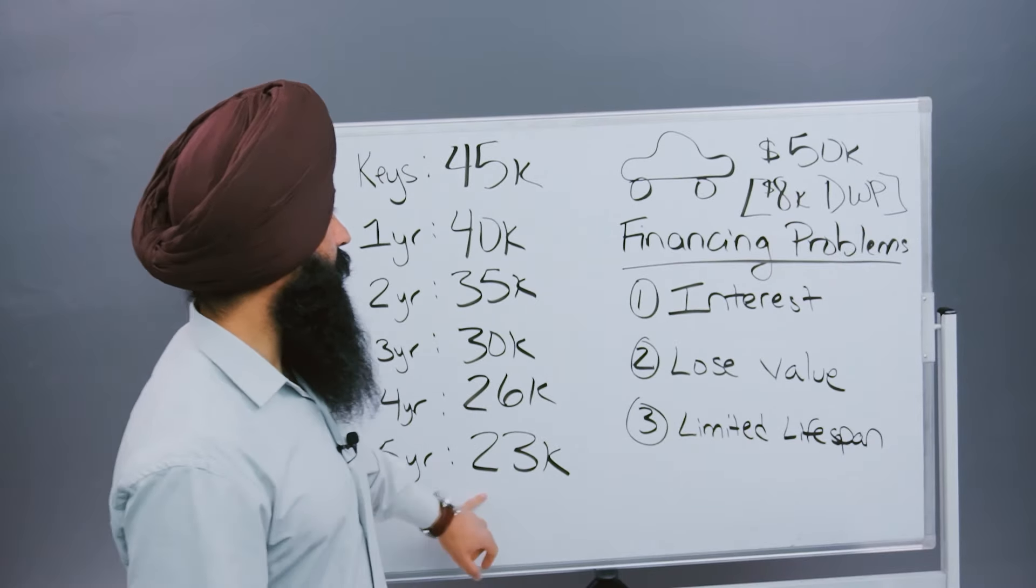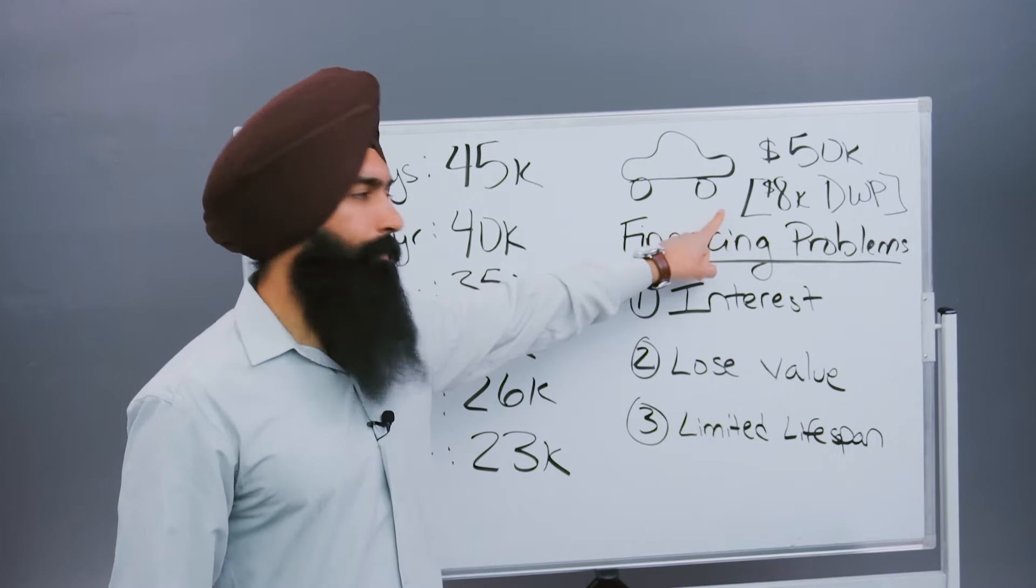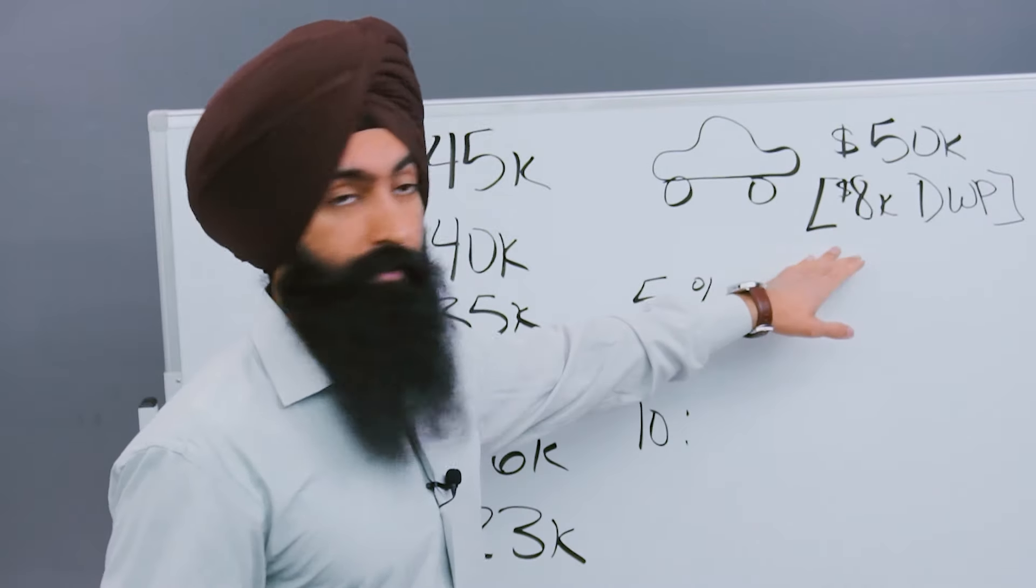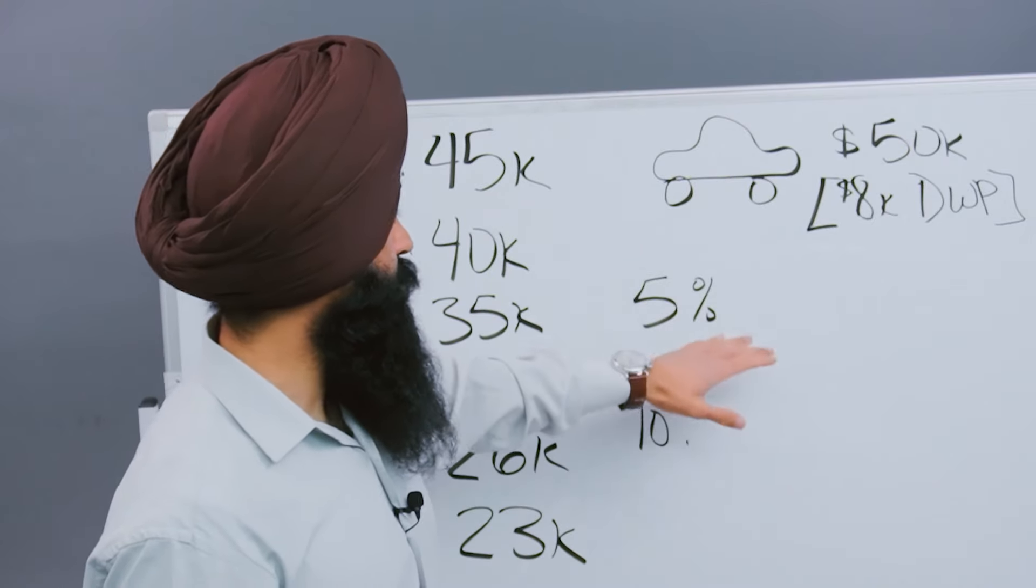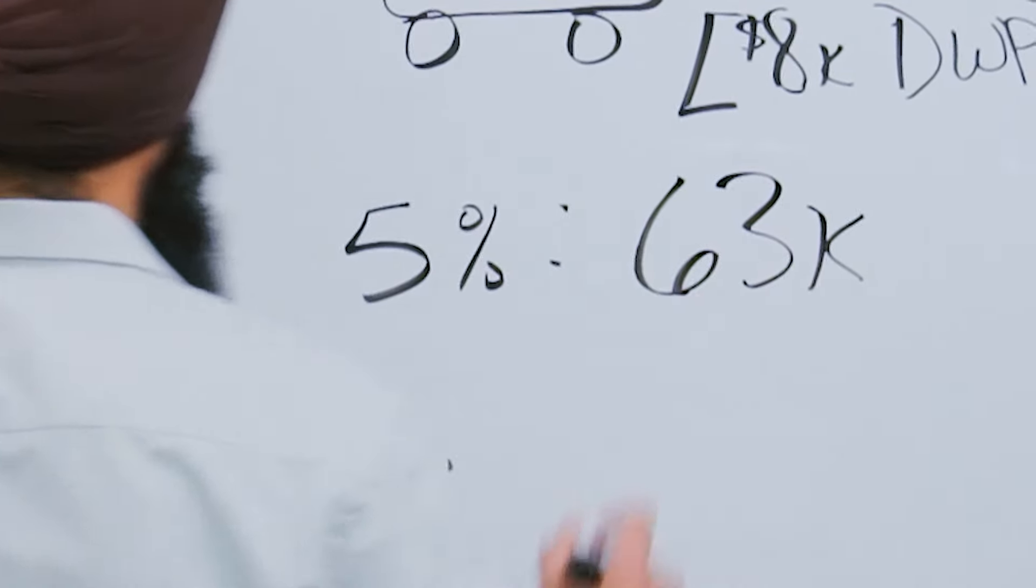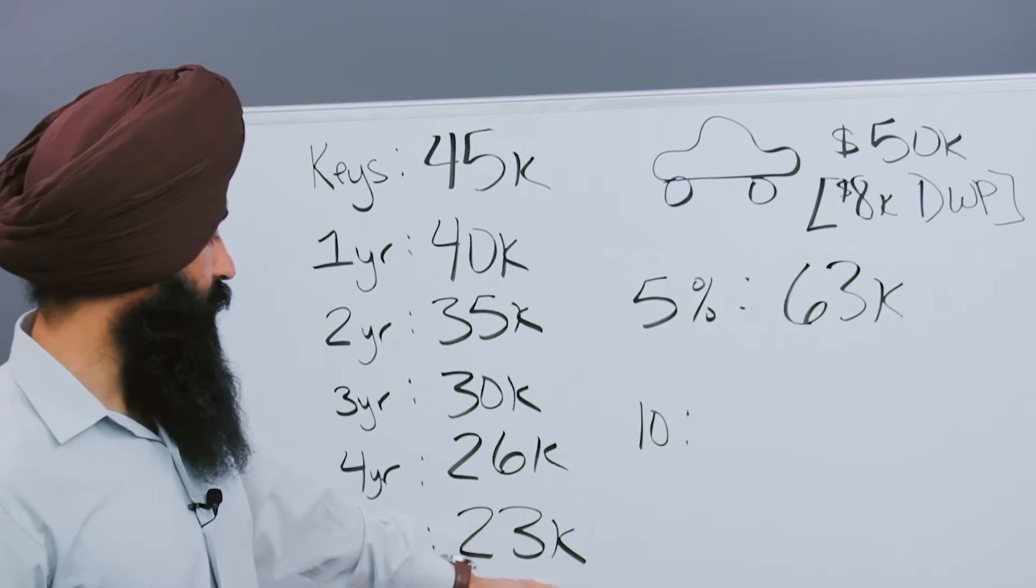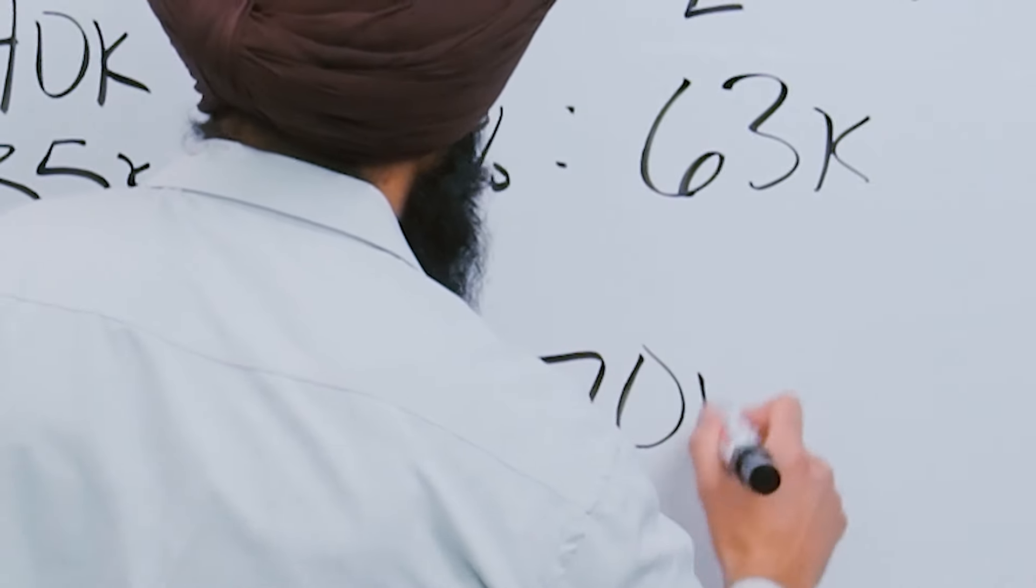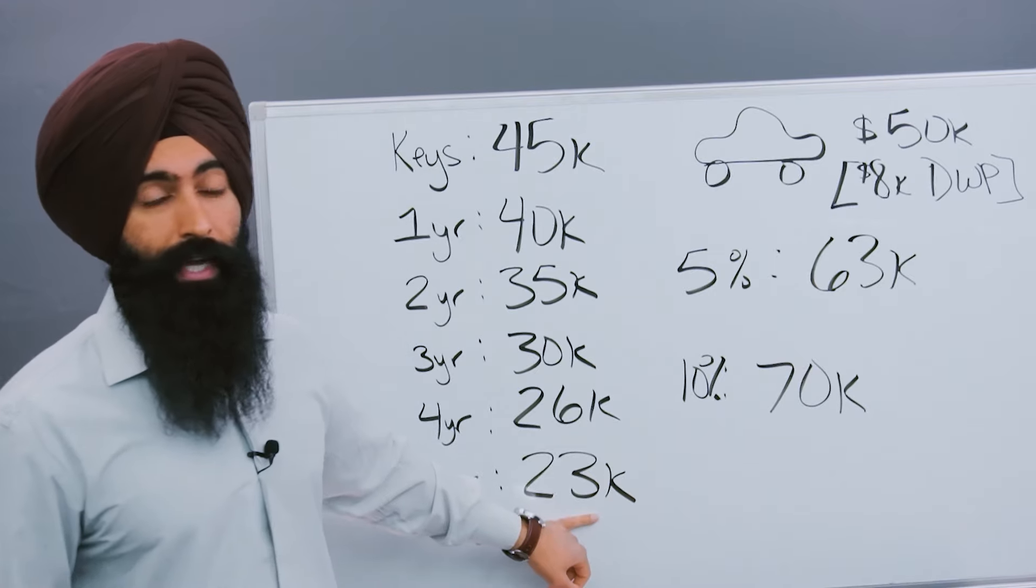Now remember, you financed $42,000 to get this car, which means, how much did you actually pay in interest? Let me wipe this off and show you. If you were to go out and finance this $42,000 at a 5% interest rate after your car taxes, fees, and interest, it's going to cost you $63,000 over the course of five years to pay off this car, which is now worth $23,000. And if you get a 10% interest rate, it's going to cost you just around $70,000 to pay off a car that's now worth $23,000.